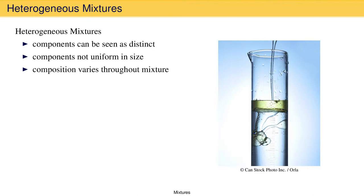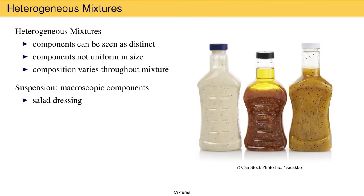If the components are big enough to be seen by the human eye, we call the heterogeneous mixture a suspension. Because the components can be seen with the human eye, we call the components macroscopic. Examples include oil and water, which we have already discussed, but also salad dressing, where you can clearly see the particles that make up the mixture.